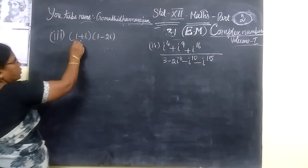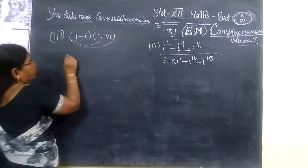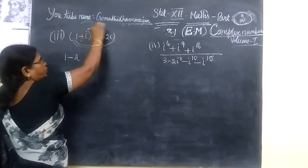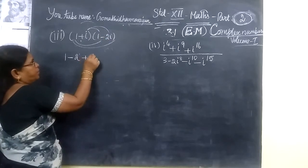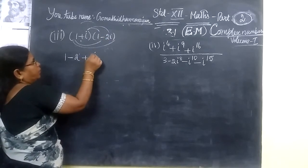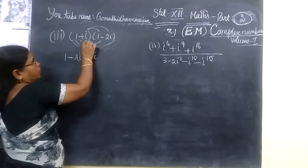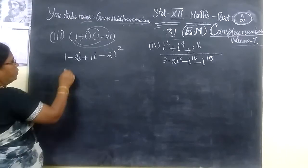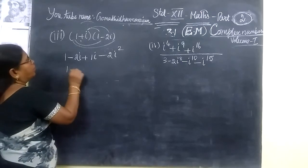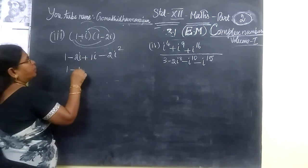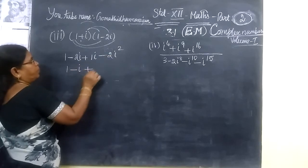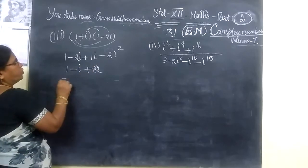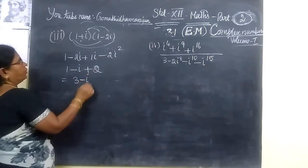Now we are going to see the next problem. Multiply as stated: 1 minus 2i, then multiply by i, so plus i. Then i into i is i squared — we know i squared is minus 1. So this becomes 1 minus (minus 2 plus 1 minus i), then plus 2, then i squared minus 1 gives plus 2. So this equals 3 minus i.